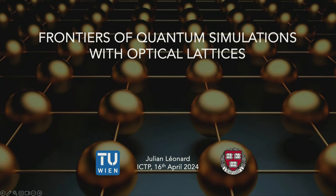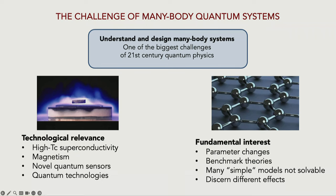In general when you're looking into performing quantum simulations, there are two different reasons why we want to do that. The first is a more technological interest — we have certain platforms that we would like to understand better to use them for industrial applications. That includes having better materials, high-temperature superconductors, better sensors, better quantum technologies. Being able to compute some problems with a physical platform would help us to solve those technological issues.